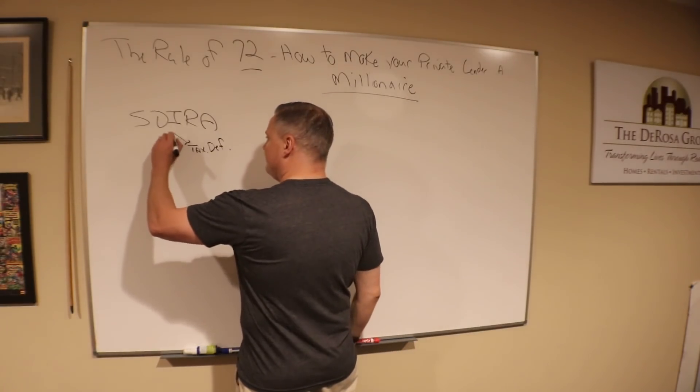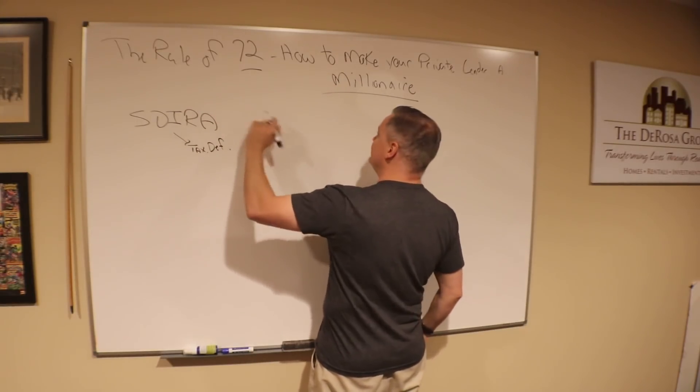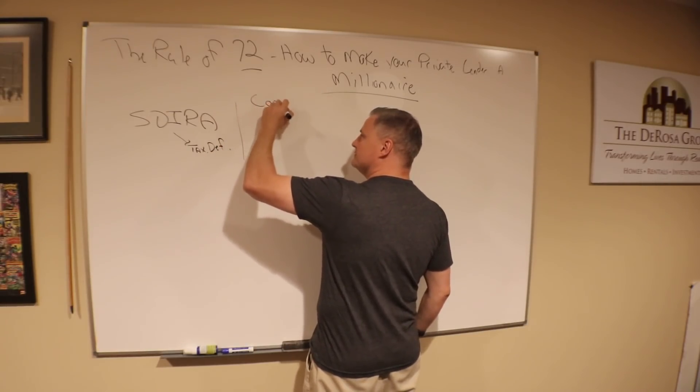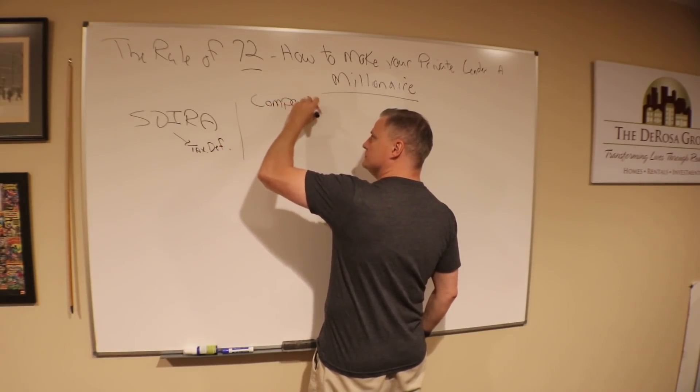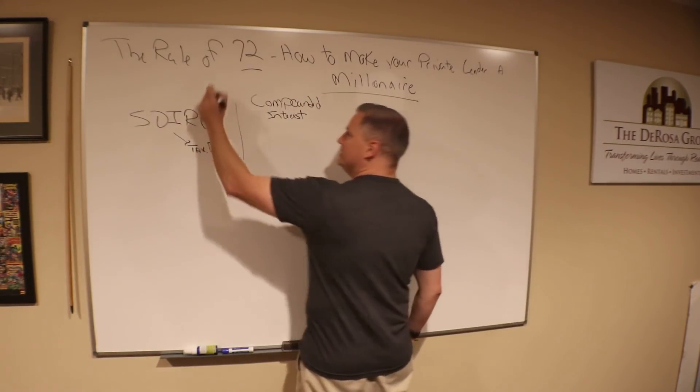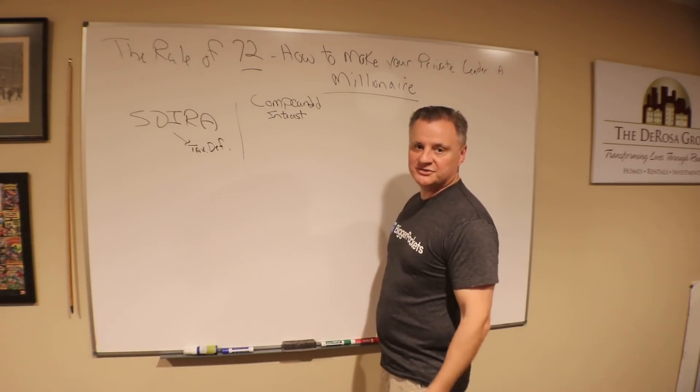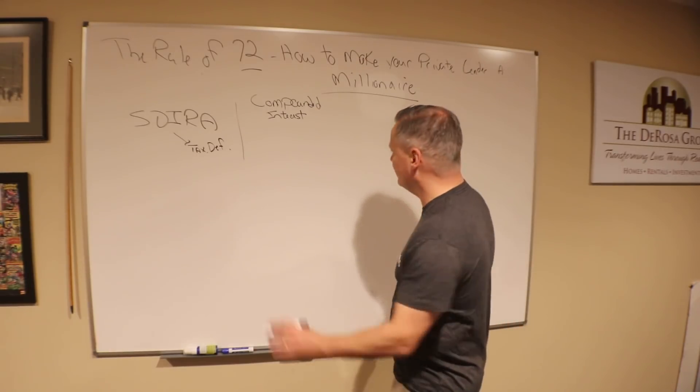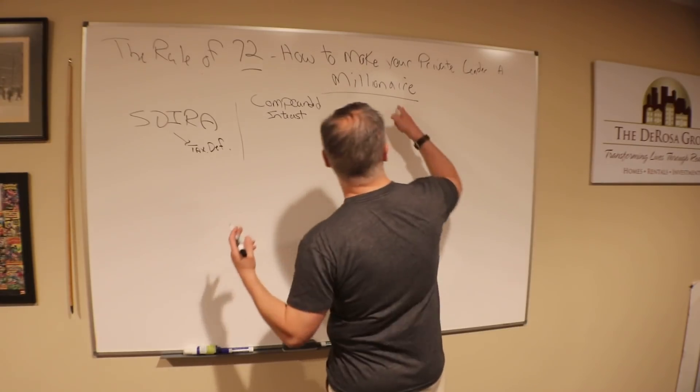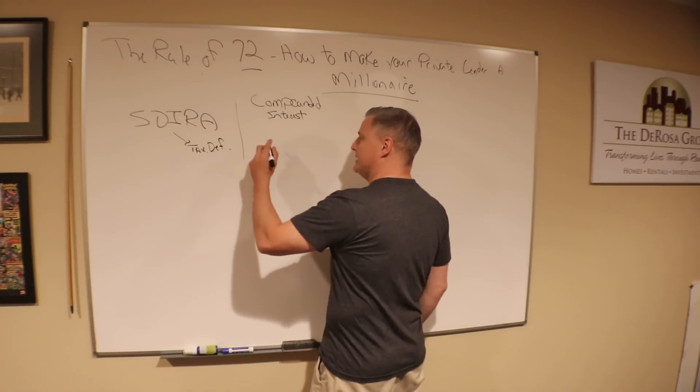Self-directed IRAs allow you to do something called compound interest. Einstein, who came up with this, called it the eighth wonder of the world. He also said that people who understand interest get it, and people who don't understand interest pay it. He said a lot about how compound interest can create millionaires through just knowing the rules.